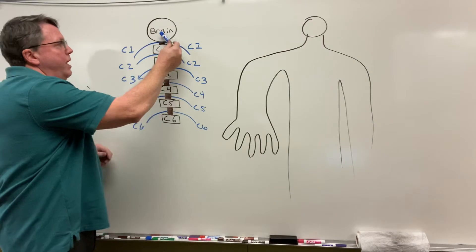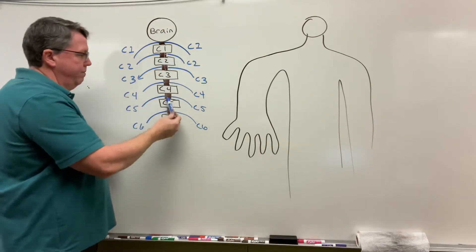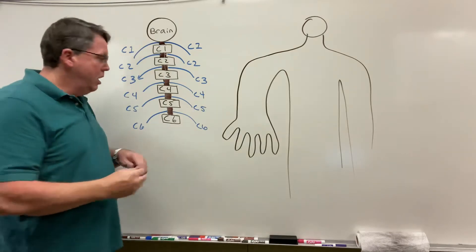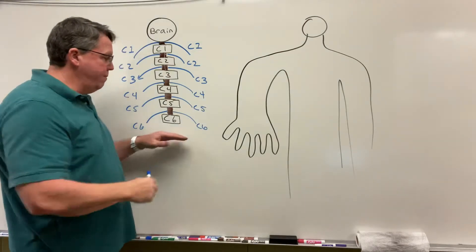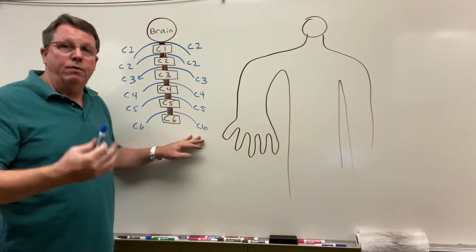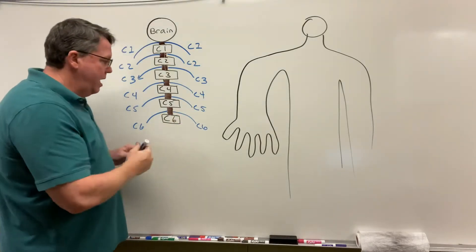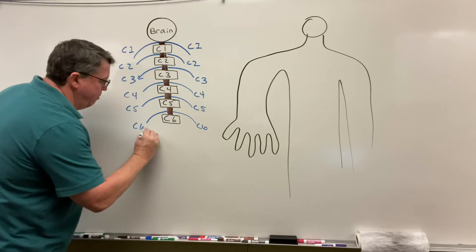This is our brain, and this is our spinal cord in the center. Coming off the spinal cord, we have spinal nerves. When we get down to about C6 of the cervical spine, which is in the lower part of the neck, we have a nerve that comes off, and we call this nerve the median nerve.